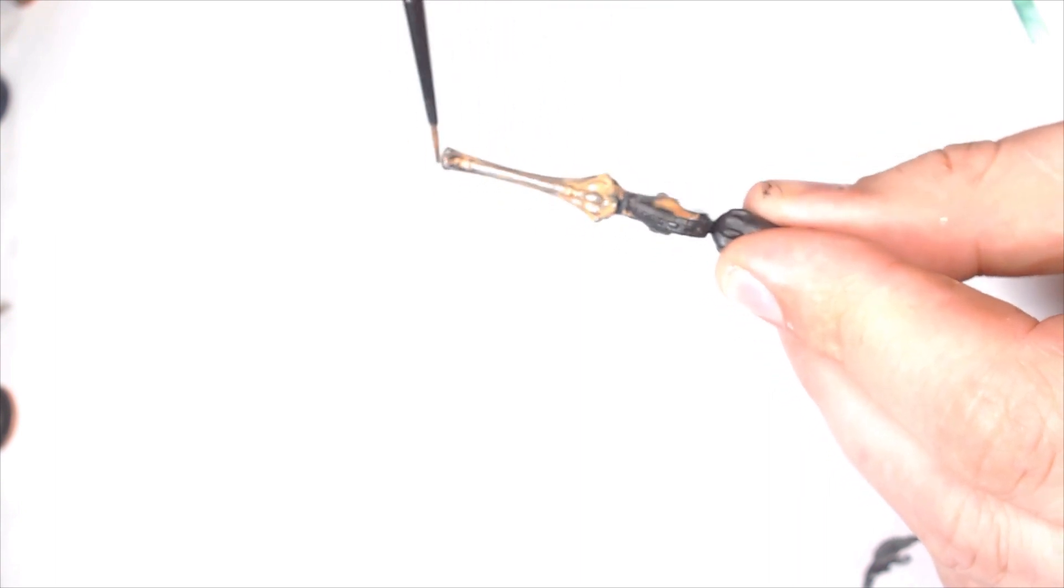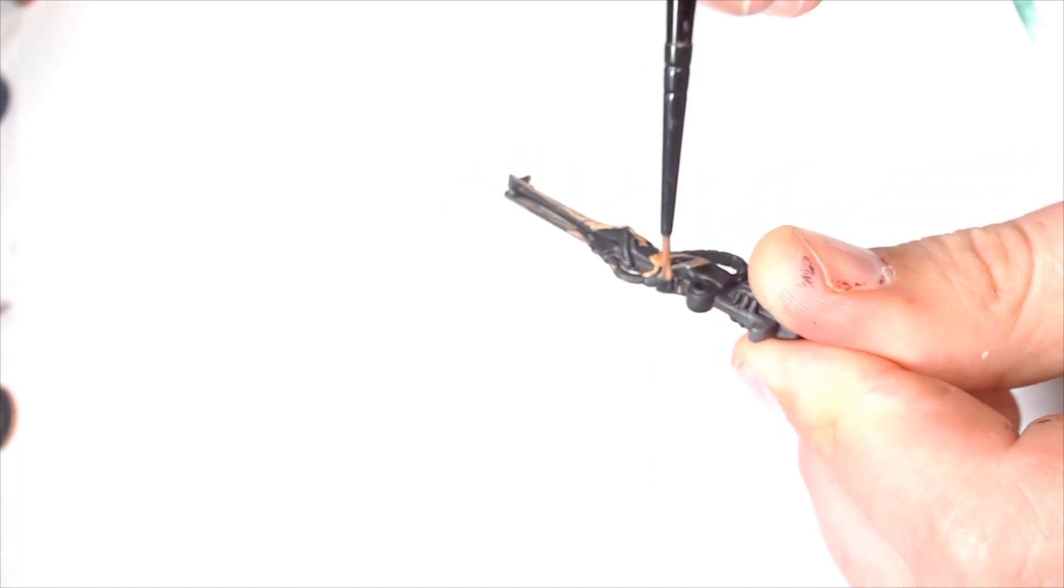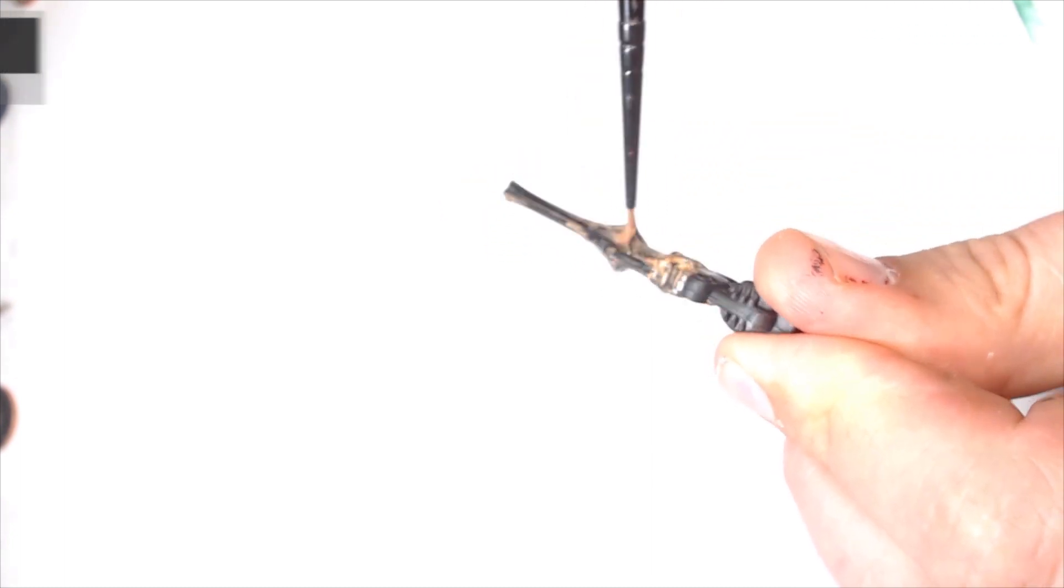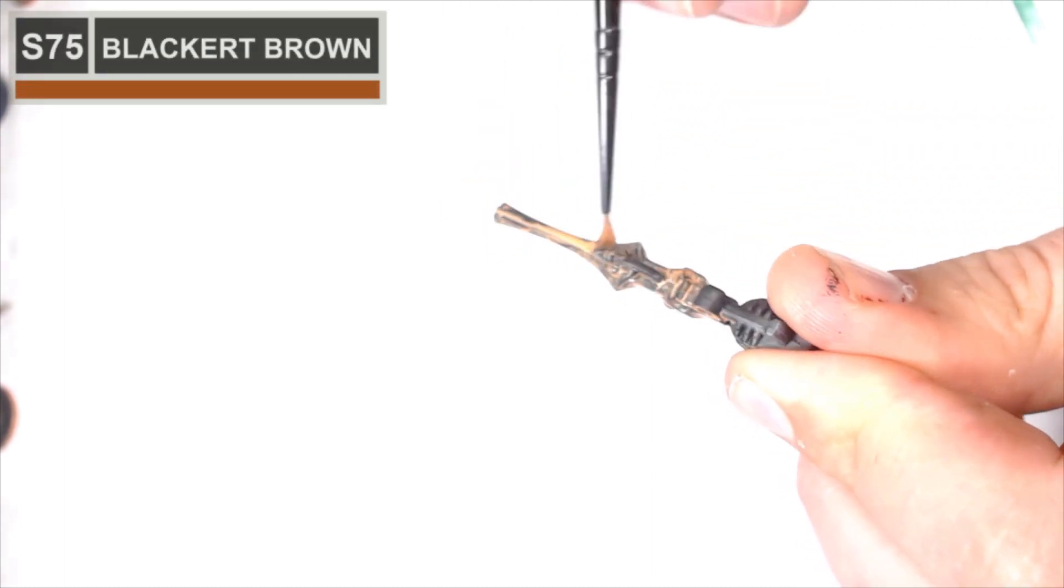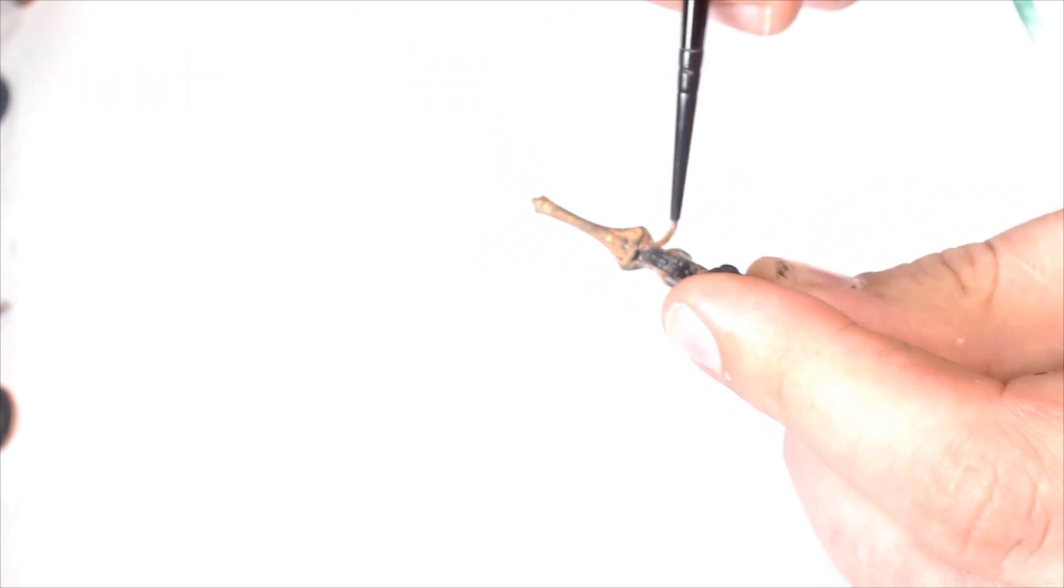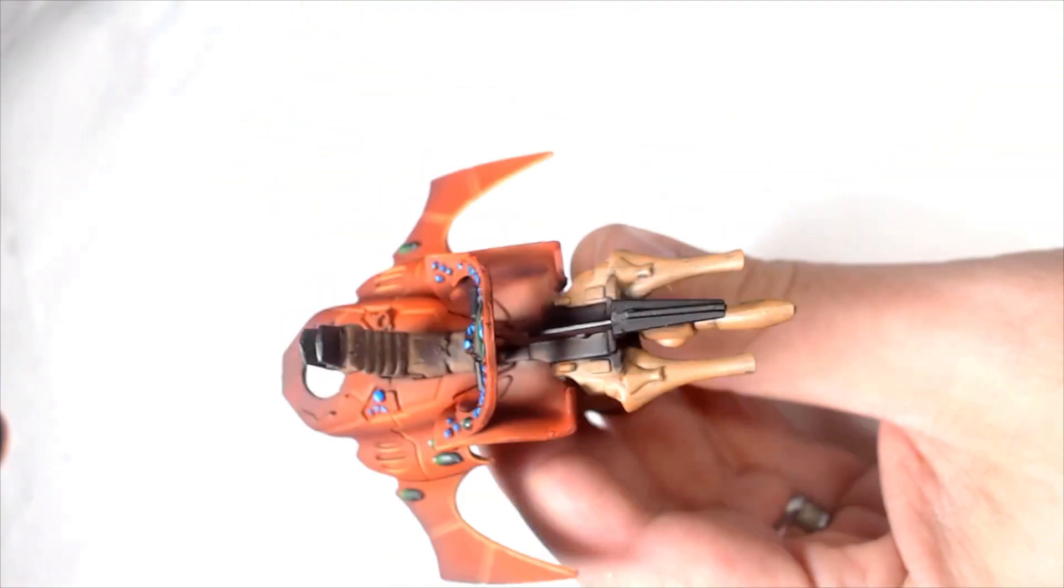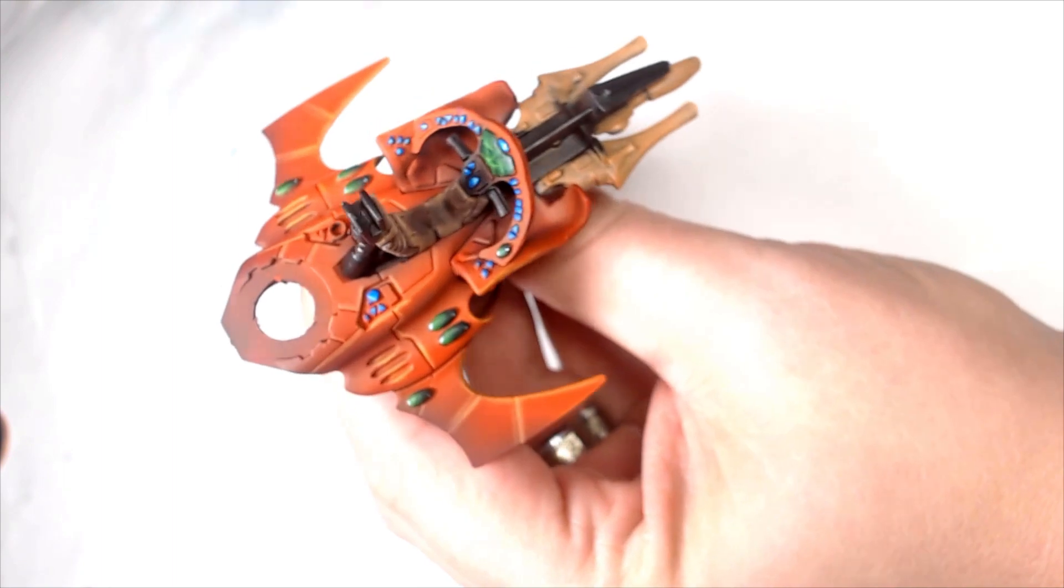So onto the weapon systems now. This is Scale 75's Blackert Brown. So I'm going for a kind of a bone color weapon. It makes it look a little bit more interesting, breaks up against the reds as well. As you can see I'm using really thin paint here, a little bit too thin to be fair. It takes a hell of a lot longer than I intended it to.